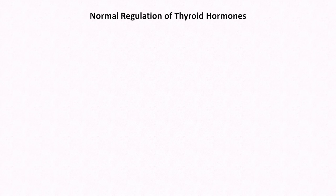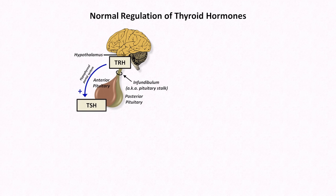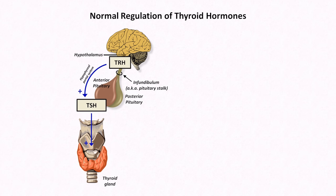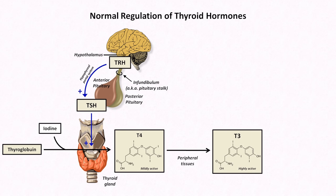I'll now move on to discuss how thyroid hormones are regulated, which will partly be a visual representation of what was just covered. It begins in the brain at the hypothalamus, where TRH is released into the hypophysial portal system to be delivered directly to the anterior pituitary, where it stimulates TSH release. TSH, released into the systemic circulation, travels to the thyroid, where it stimulates the formation of predominantly T4 from thyroglobulin and iodine. T4 travels in the bloodstream, largely bound to thyroxine binding globulin, and when it reaches certain peripheral tissues, it's converted to T3 by an enzyme — or more accurately, a collection of very similar enzymes — called deiodinases, which can add or remove an iodine atom from a molecule.